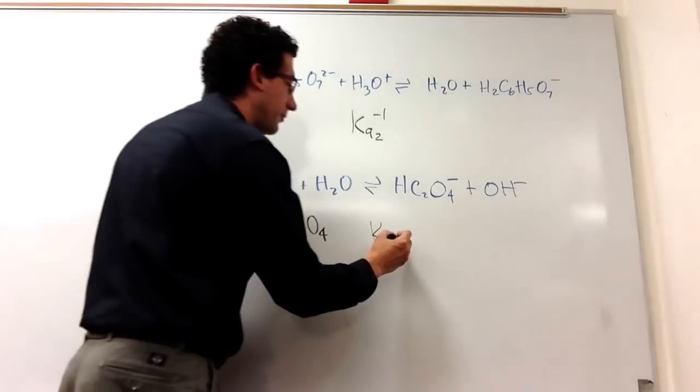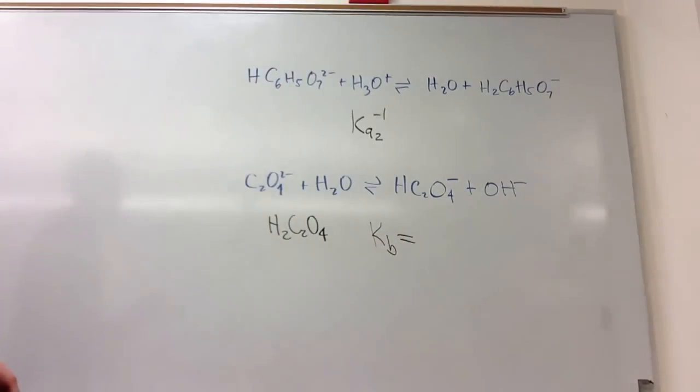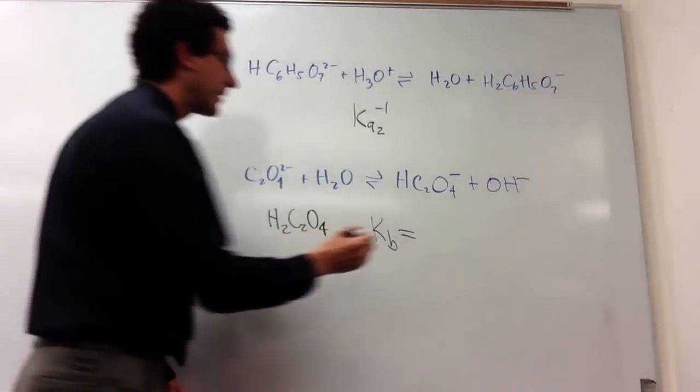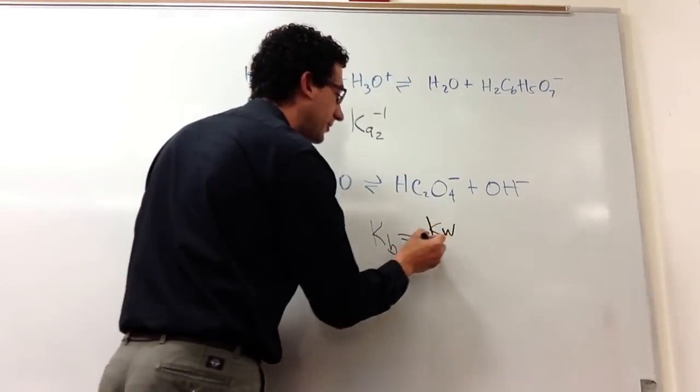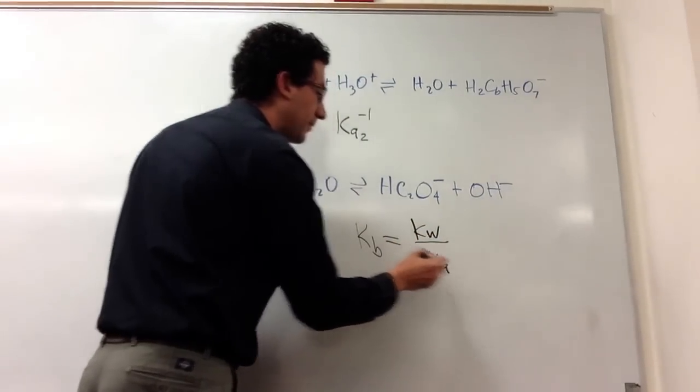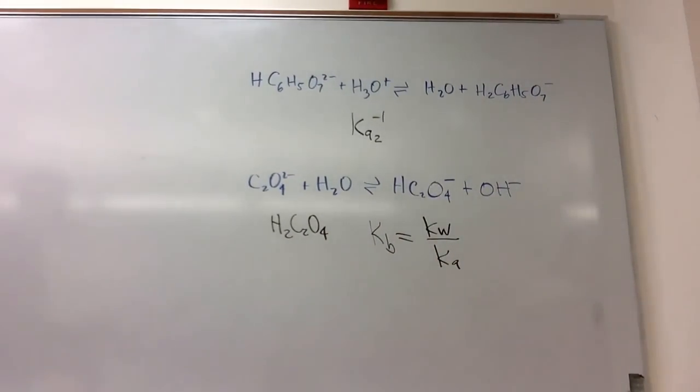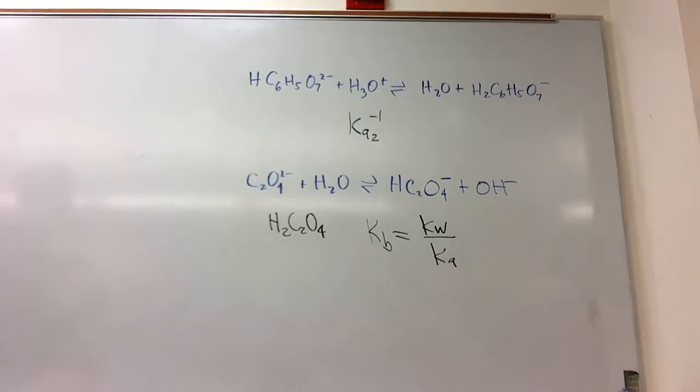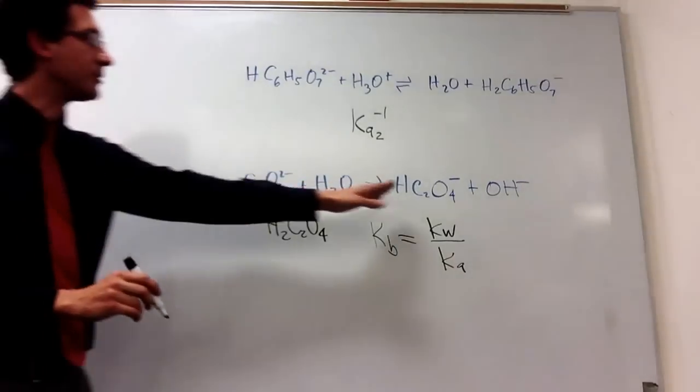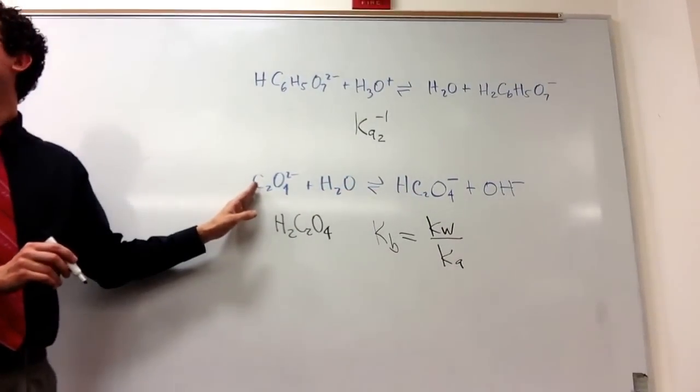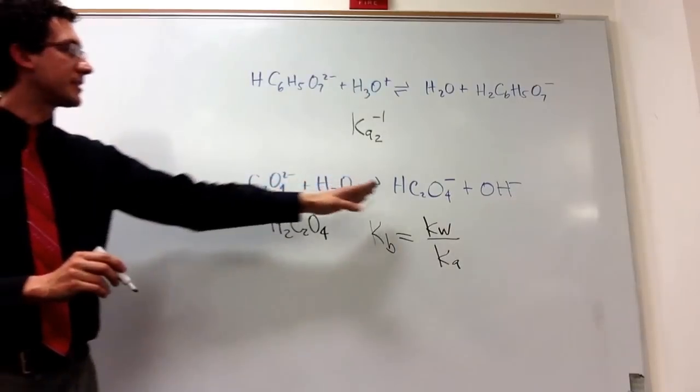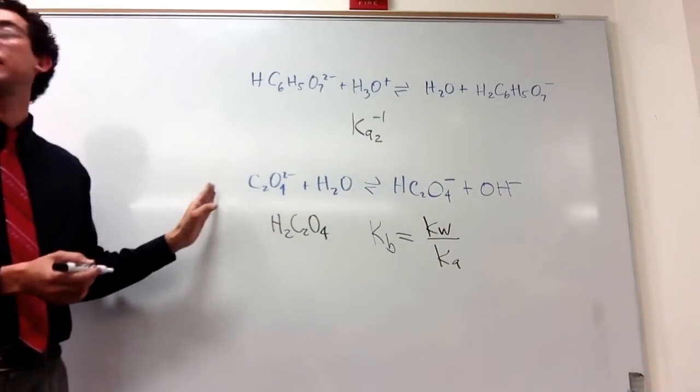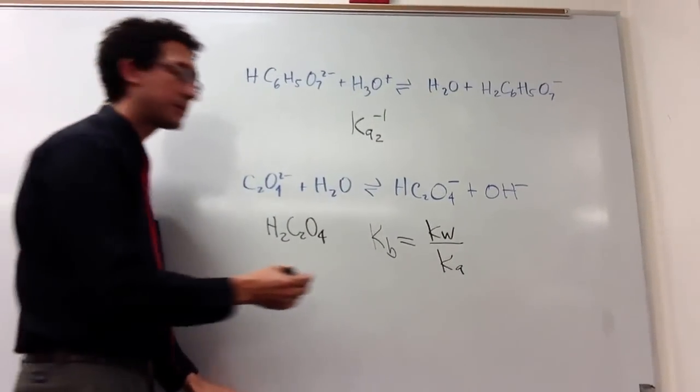Okay, well, we only know KA's, so I have to put this in terms. Okay, so this would be KW over KA. But the big, KW is a constant. The big question is, which KA are we talking about? Well, we already figured out that it's losing its last proton going in reverse. And its last proton, so that would be KA2, the second, second one.